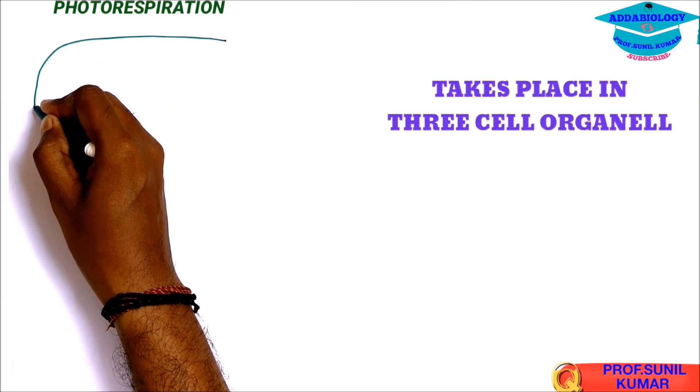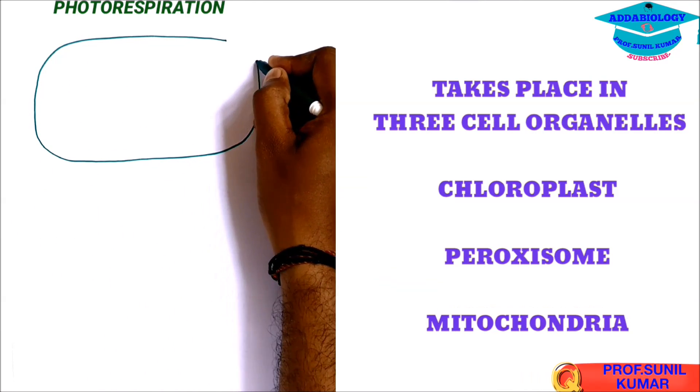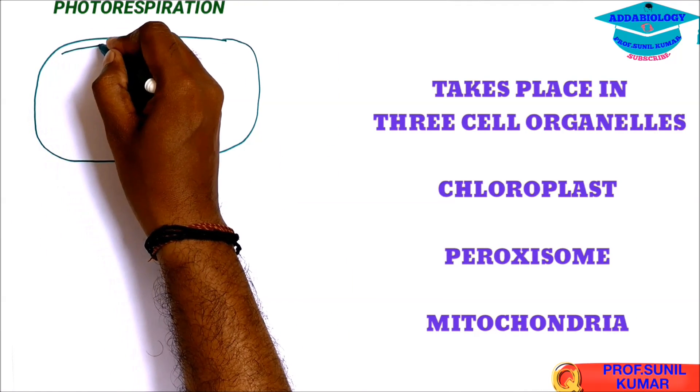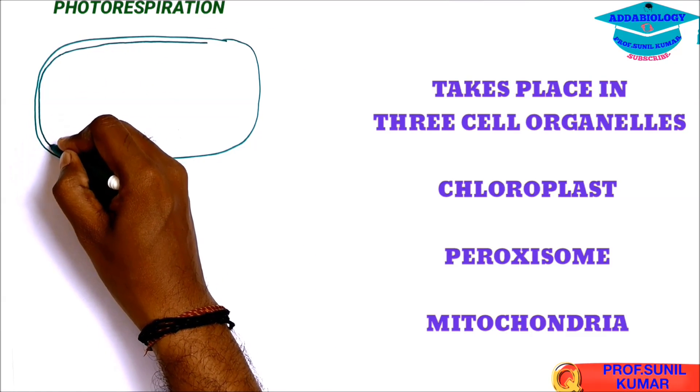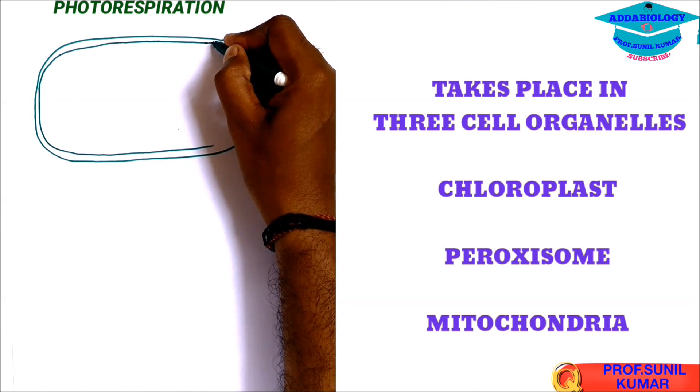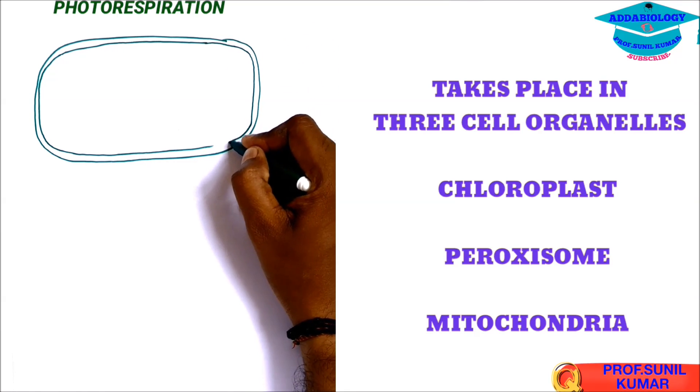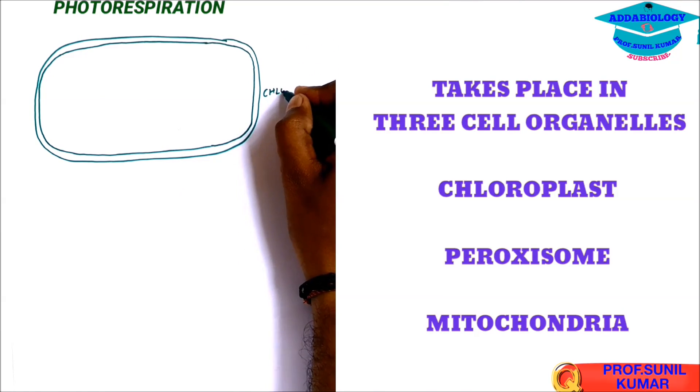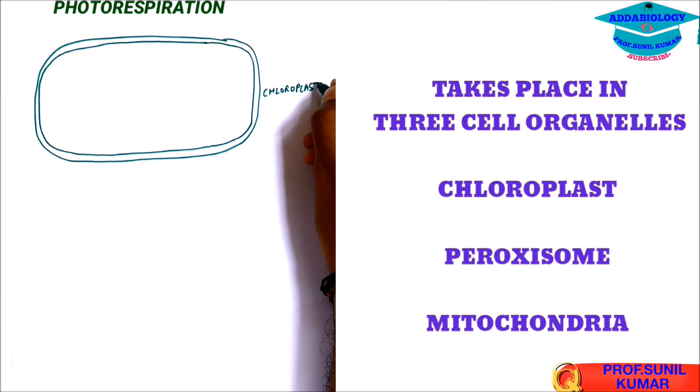Let us understand the cycle. So first what we need to do, we need to draw a double line. Now this has to be a double membrane structure because we are drawing the structure of chloroplast and we all know that chloroplast is a double membranous structure.